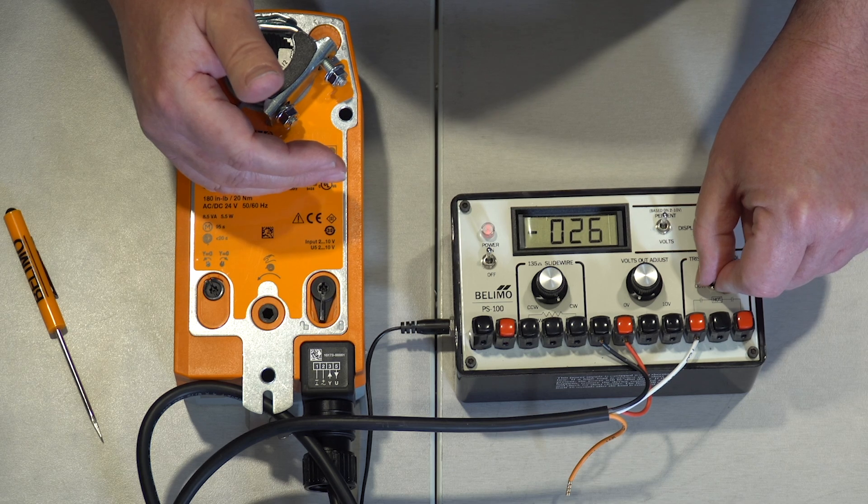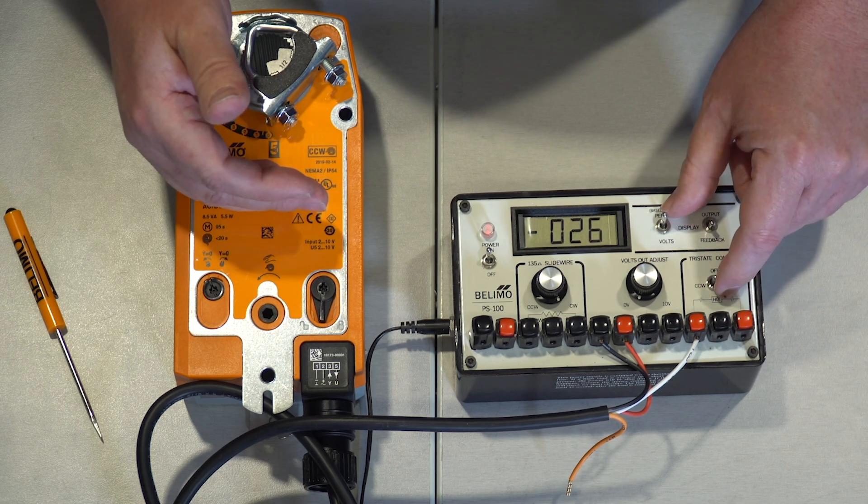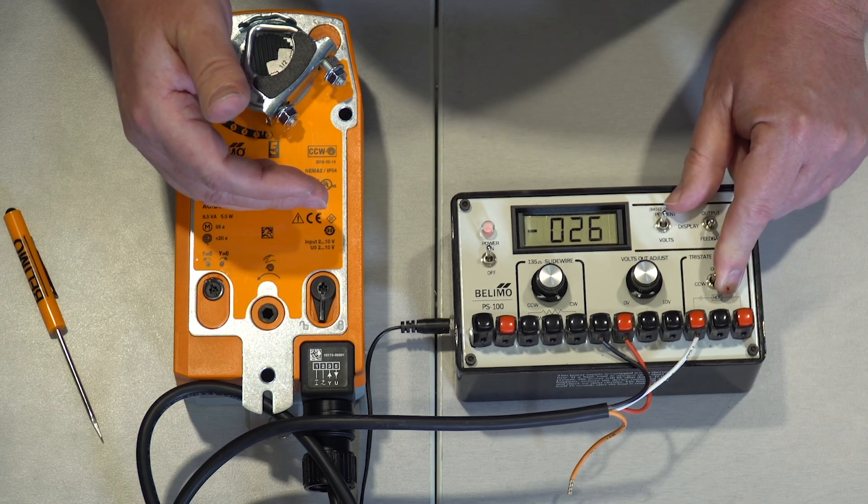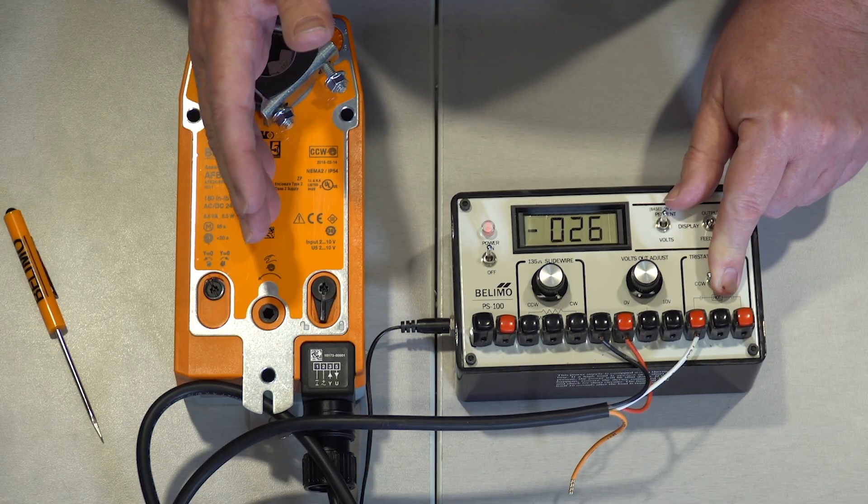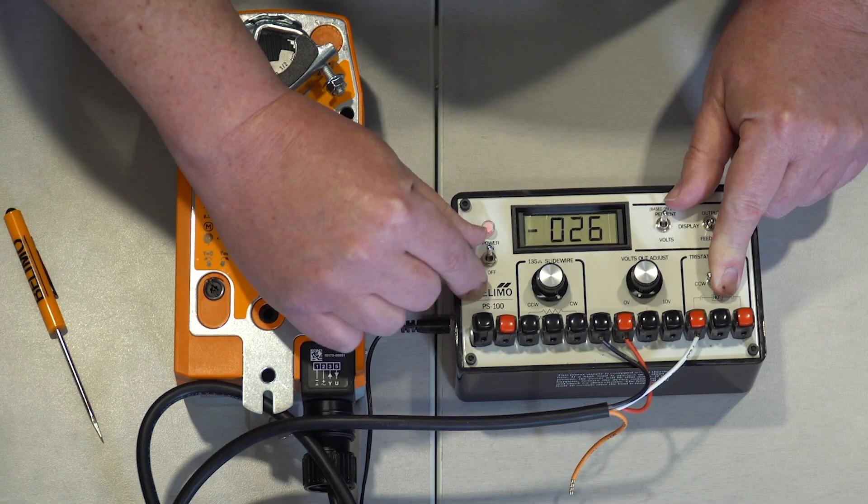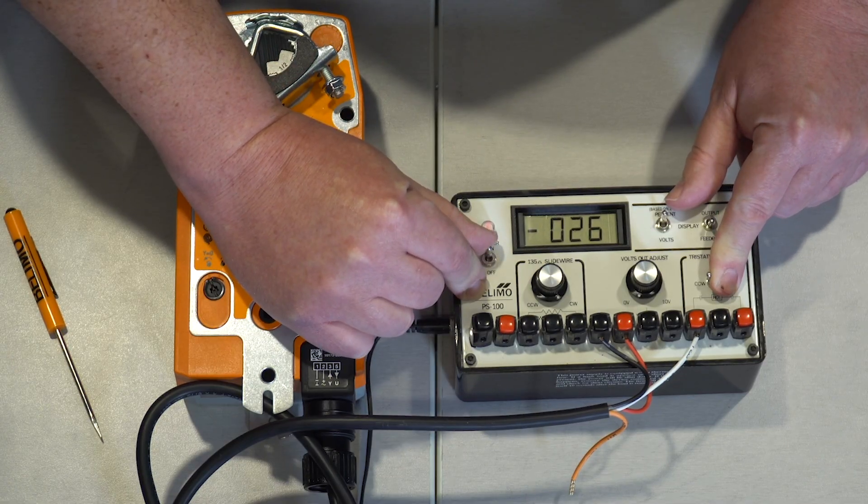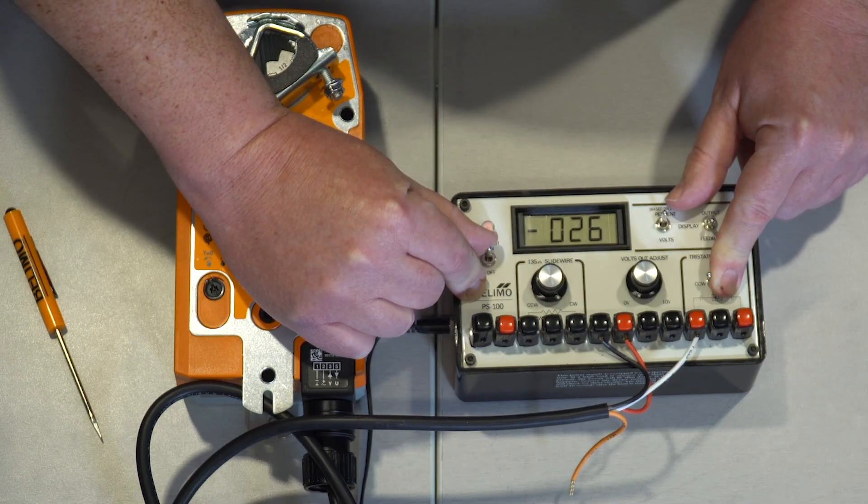A second way to wire this, which is sometimes more popular, is to have the 24 volts applied, and that will drive the actuator open. And then we'll use the spring return as a means to have the actuator fail, whether that be open or closed.